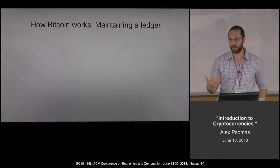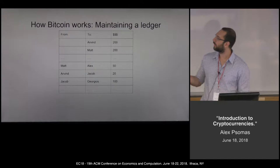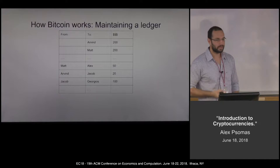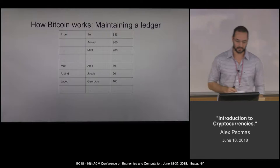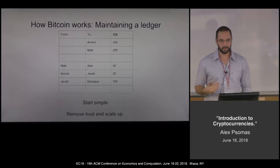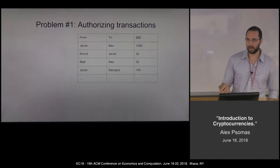The problem we'll be trying to solve is maintaining a ledger — something like this. The first thing is Arvin's initial balance of 200, Matt's initial balance of 200. There's a transaction of the form: Matt gives Alex 50 bucks, Arvin gives Jacob 20 bucks, Jacob gives Georgios 100 bucks, and so on. So we're trying to maintain this list of transactions — a ledger. We're going to start very simple, removing trust and scaling up, solving problems as they come.